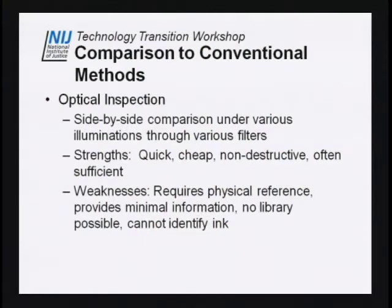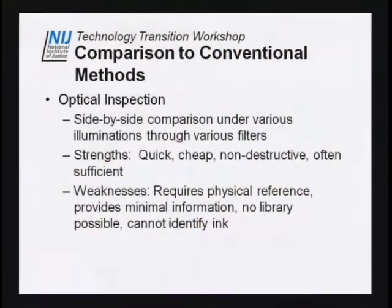Weaknesses of optical inspection: you have to have a physical reference to compare your unknown against. It provides minimal information. If the two don't match, that's clearly a non-match — a negative result. If they do match, that really doesn't prove they're the same ink, only that they're similar enough under the particular illuminations and filtering you're using. You can't really build a library of data to compare inks that way. You definitely cannot identify the ink.